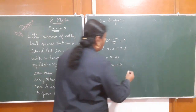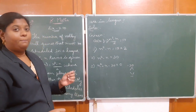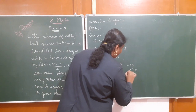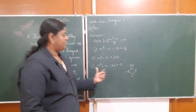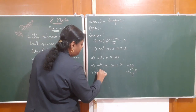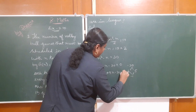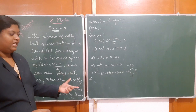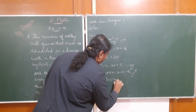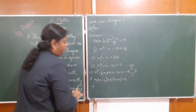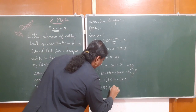Now we factor the quadratic. We need two numbers that multiply to -30 and add to -1. Those are -6 and +5. So we get (n + 5)(n - 6) = 0.